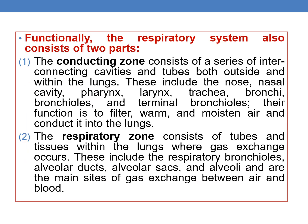Functionally, the respiratory system consists of two parts: the conducting zone and the respiratory zone. The conducting zone consists of a series of interconnecting cavities and tubes both outside and within the lungs. These include the nose, nasal cavity, pharynx, larynx, trachea, bronchi, bronchioles, and terminal bronchioles. Their major function is to filter, warm, and moisten the air and conduct it into the lungs.